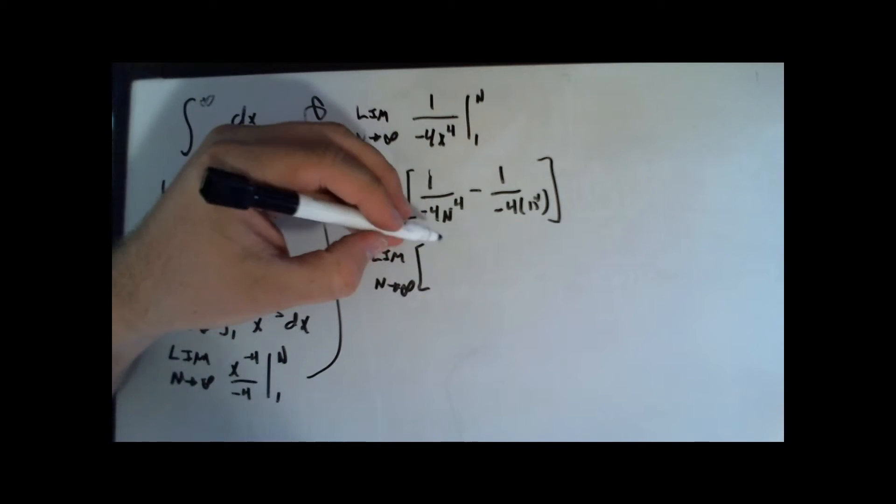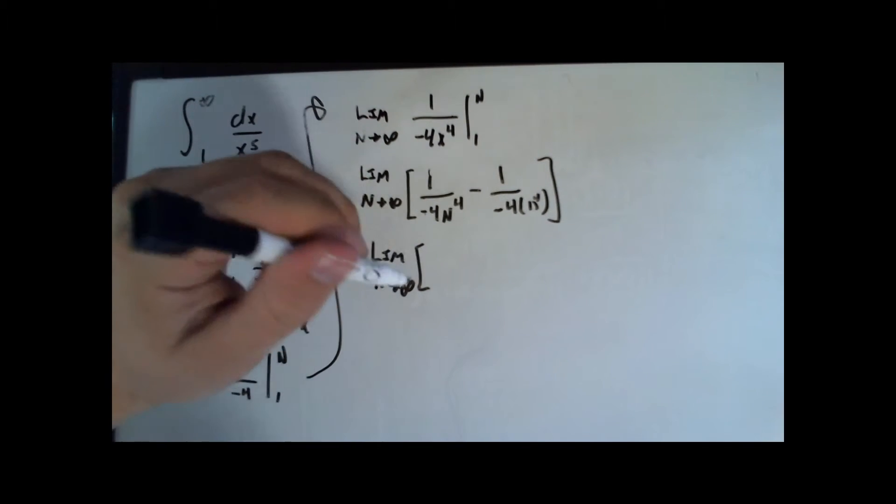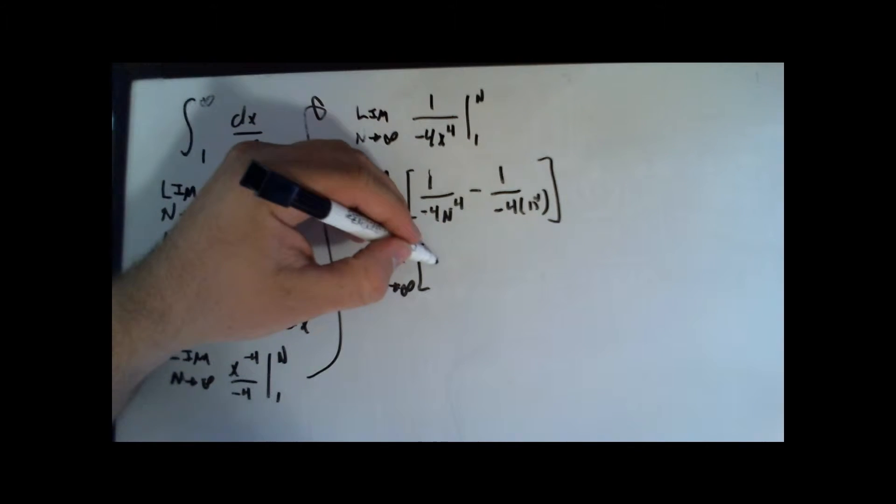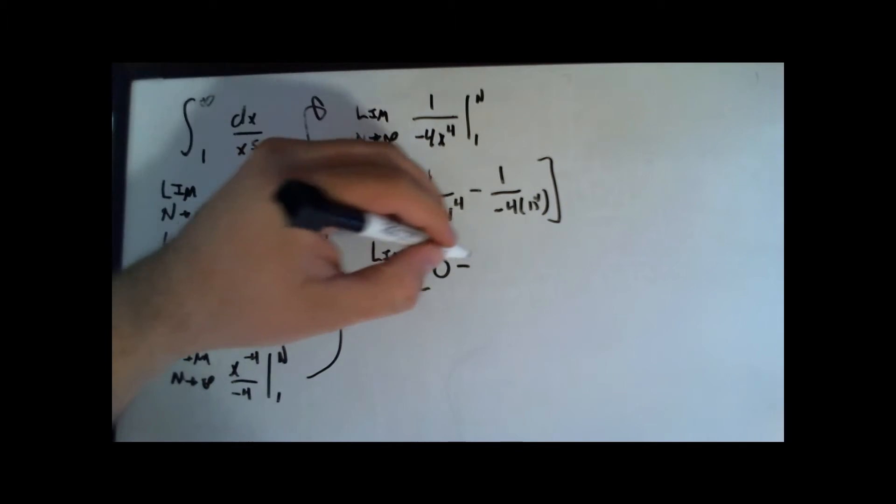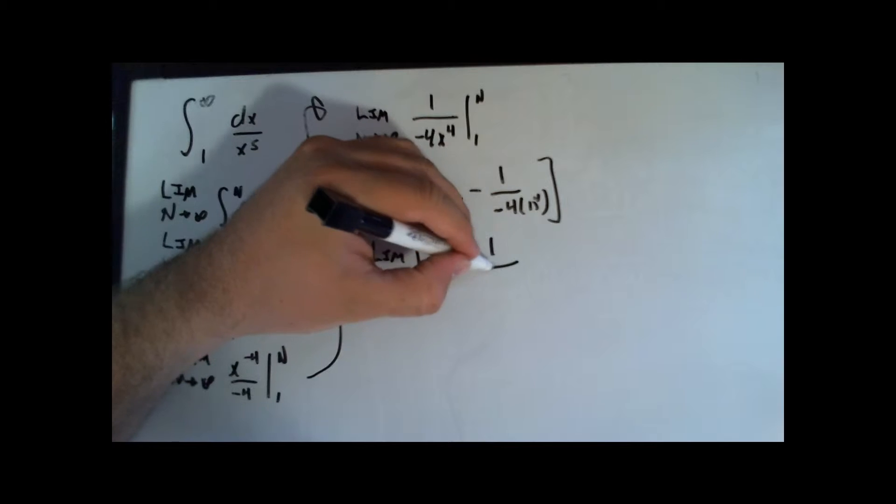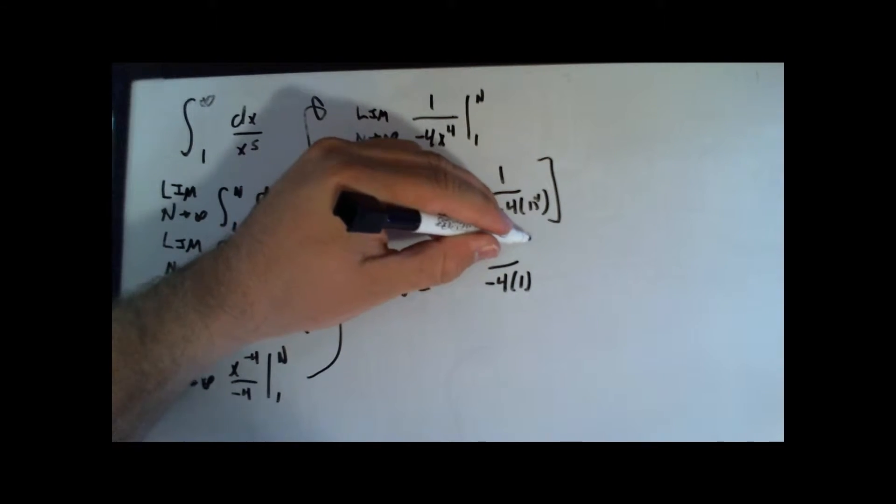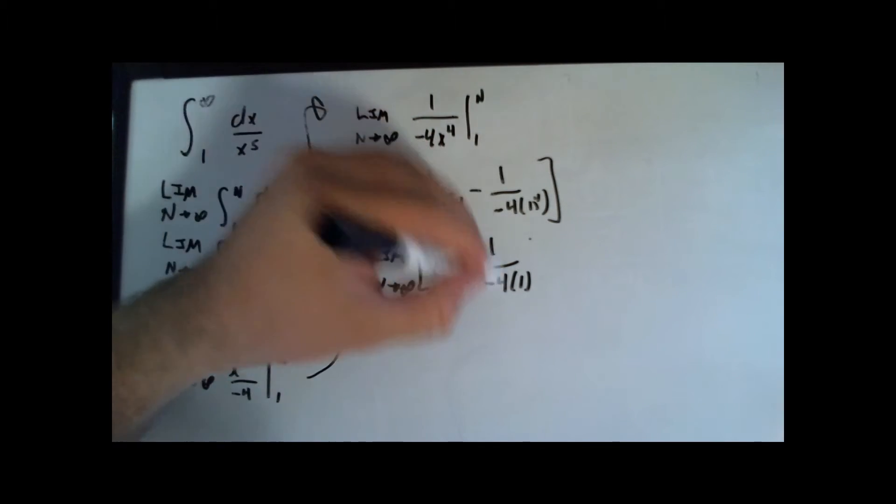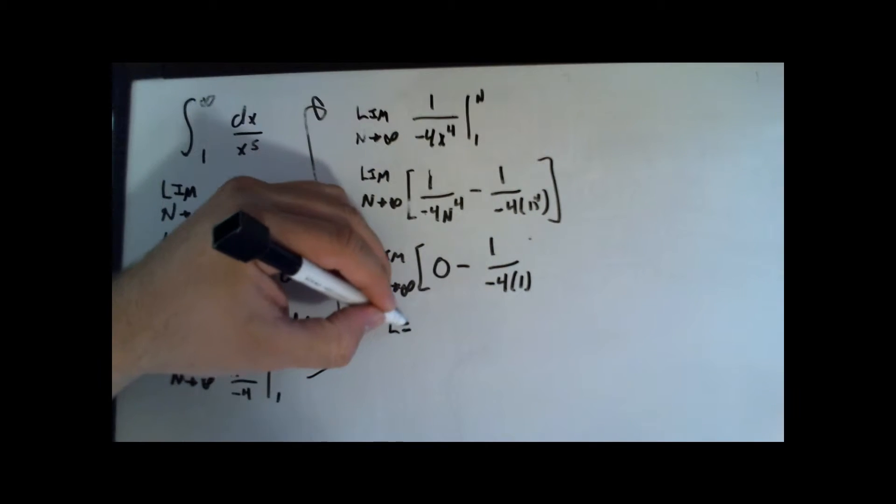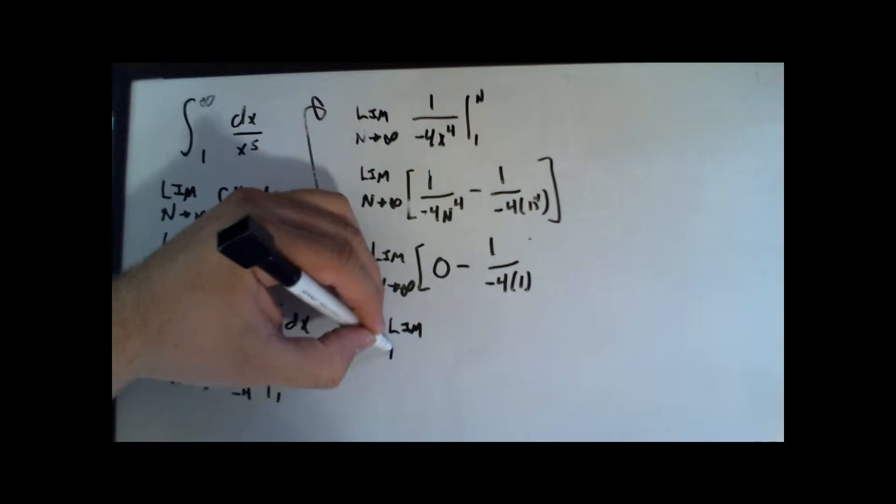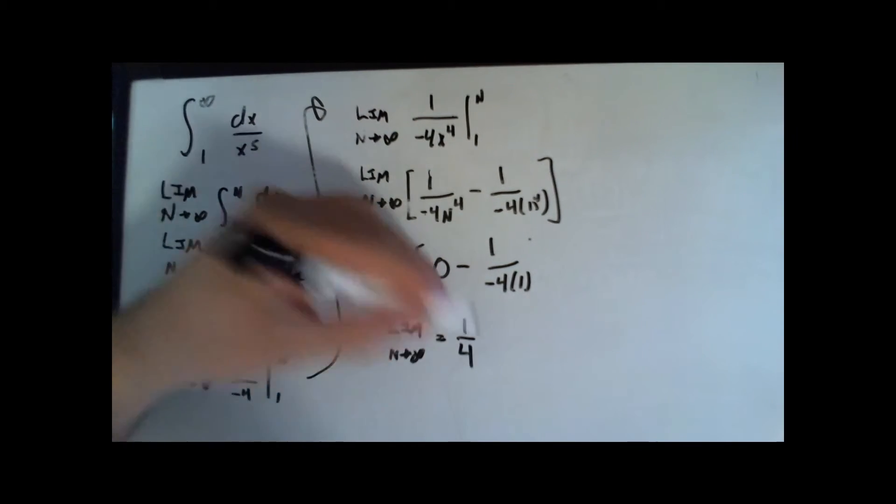And 1 divided by a huge negative number is pretty much 0. 0 minus 1 over negative 4 times 1 to the 4th is just 1. So I have 0 minus negative 1/4. The limit as n approaches infinity equals 1/4.